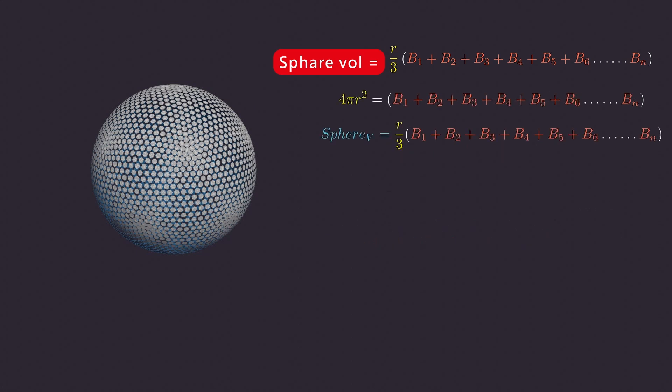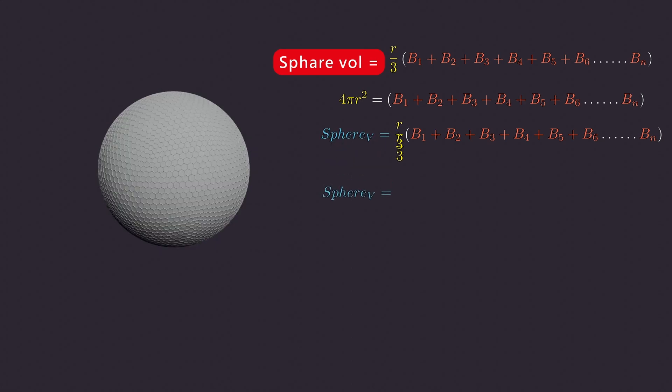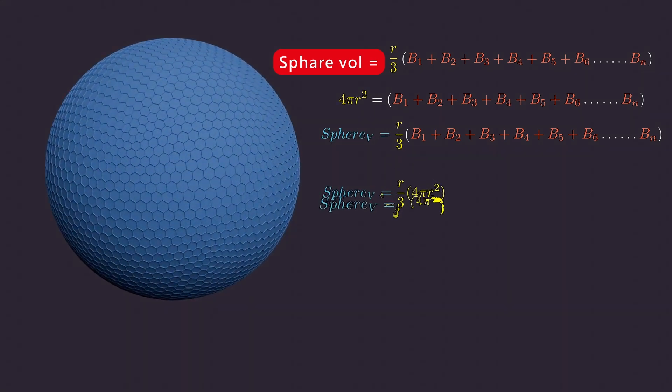We can substitute this into our formula: Volume of the sphere equals one-third times four times pi times R cubed, or 4πR³/3.